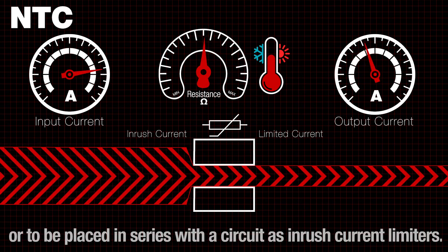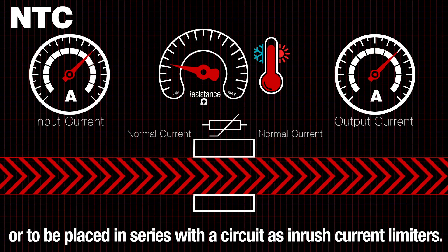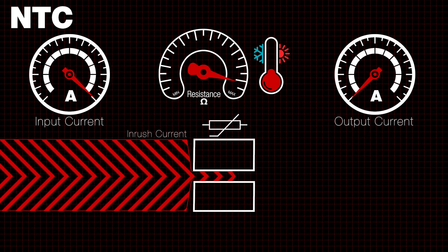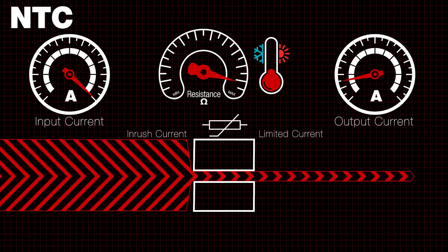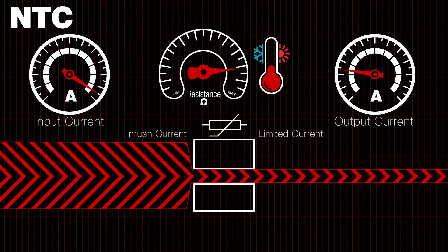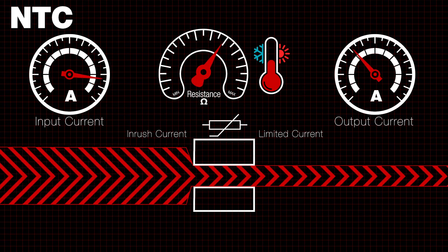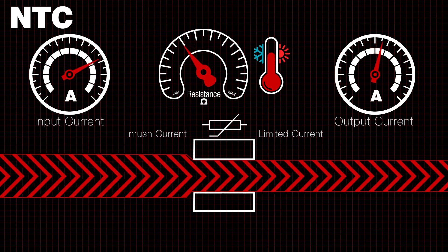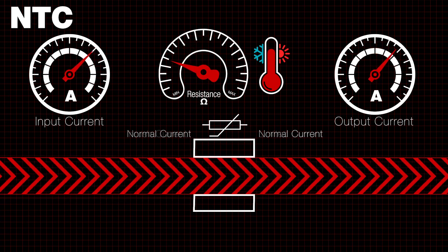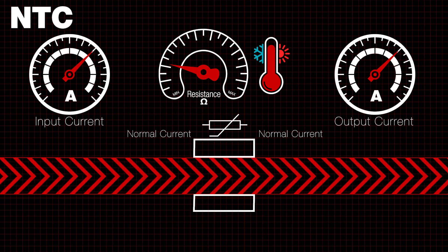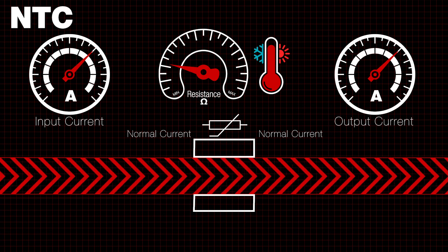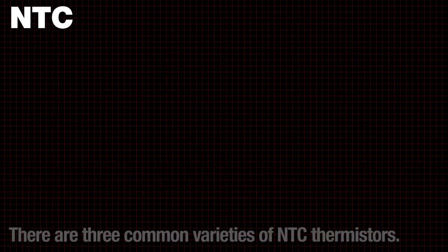NTCs can also be placed in series with a circuit as inrush current limiters. This animation demonstrates the thermistor being used as an inrush current limiter. Initially, inrush current is partially blocked, or limited, by the high resistance of the thermistor and is shed as heat. As the thermistor heats up, its internal resistance drops, allowing more current to flow until it reaches its standard operating current flow and temperature level.